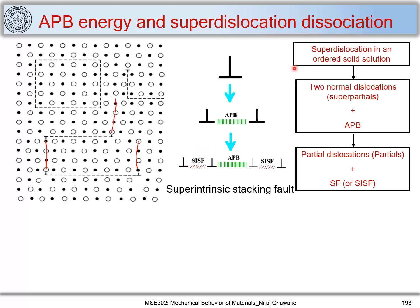In super lattice or ordered compounds, when the super lattice dislocation dissociates into two partial dislocations — called super partials — it forms an antiphase boundary between them. These super partials can further split into partial dislocations, and between these partials there is a stacking fault, which we call the super intrinsic stacking fault (SISF). This is how dislocation dissociation takes place in ordered solid solutions.